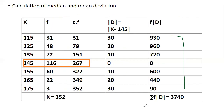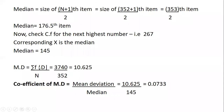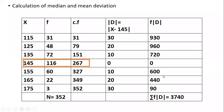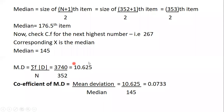Add all f|d| values: Σf|d| = 3740. Mean deviation from median = Σf|d|/n = 3740/352 = 10.625. That gives us the mean deviation from median for the discrete series.